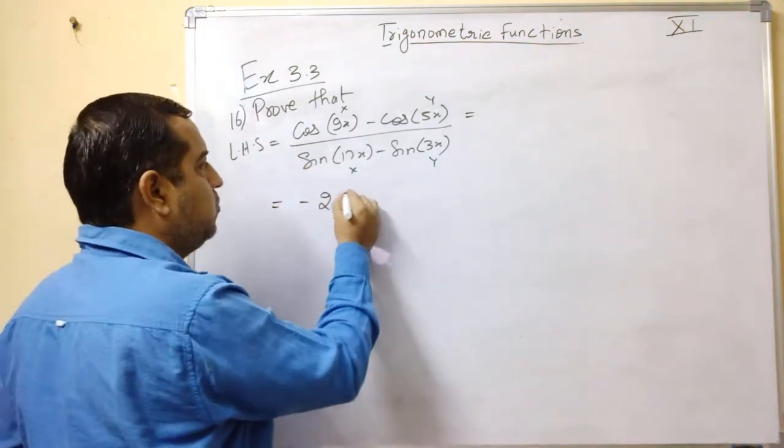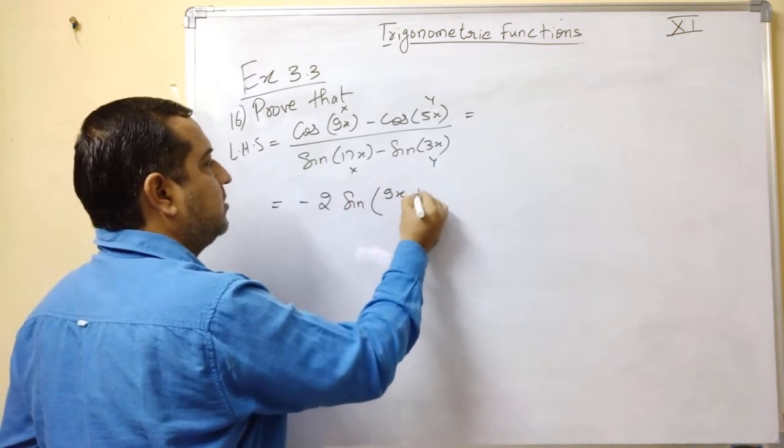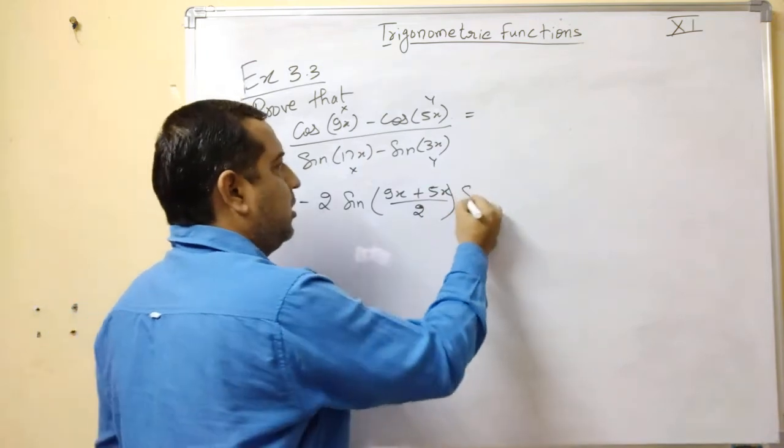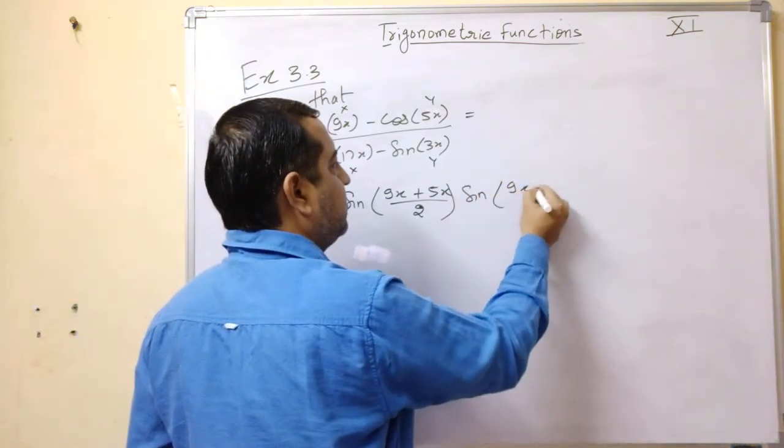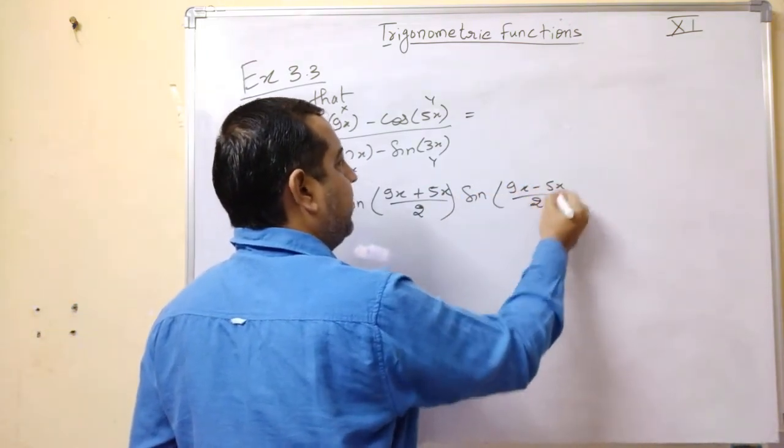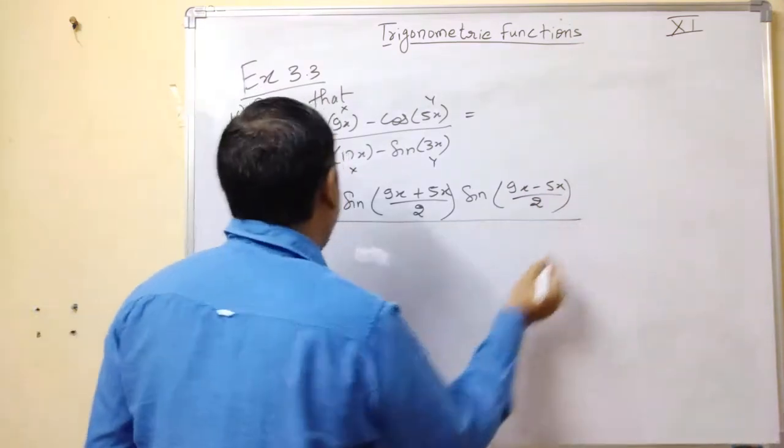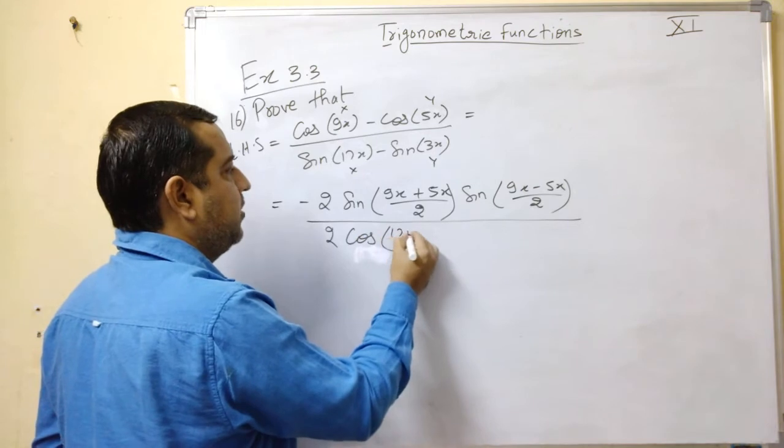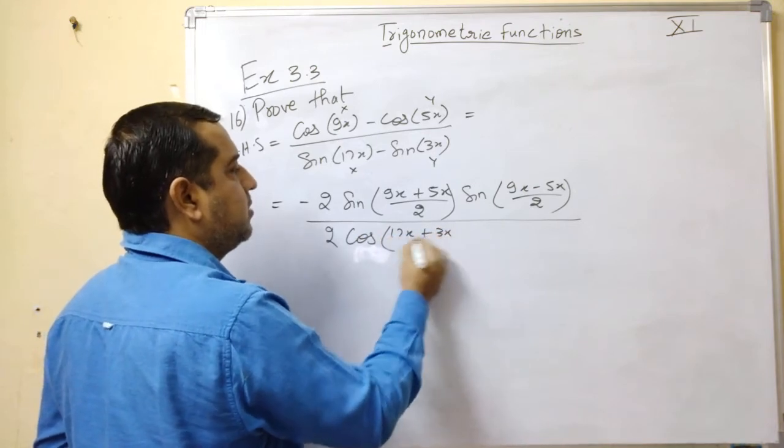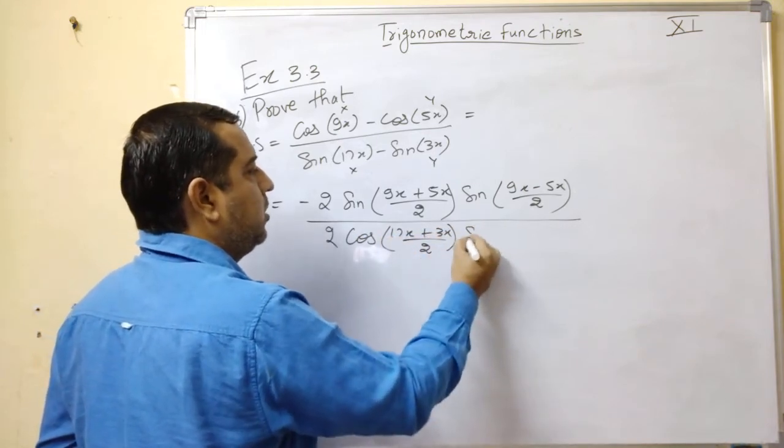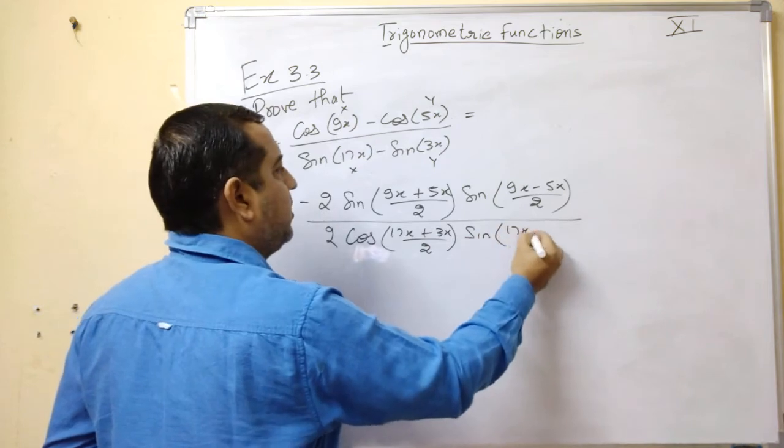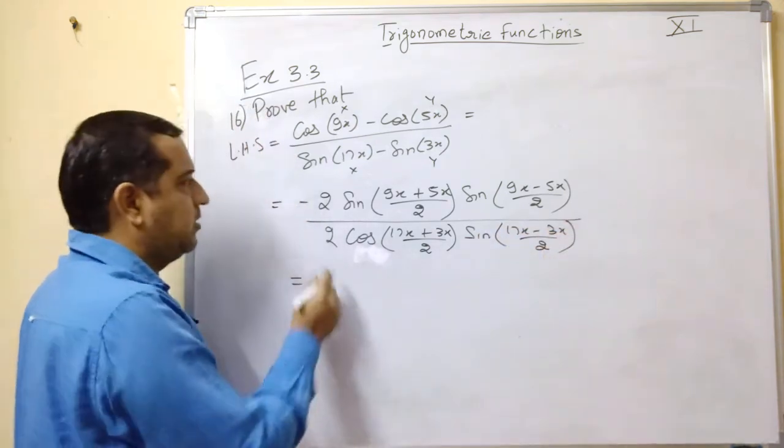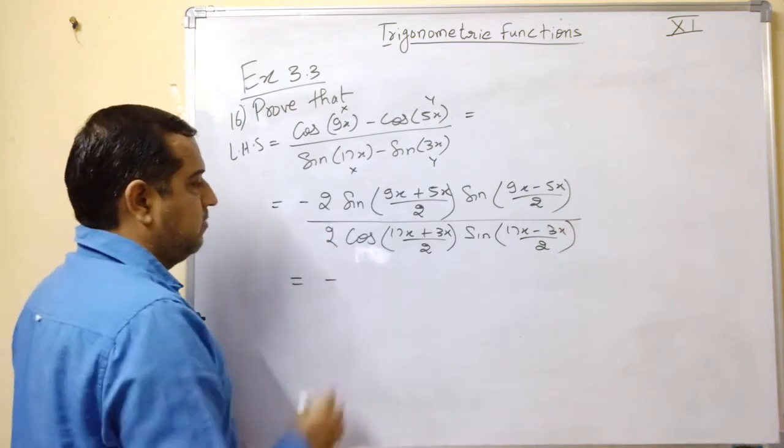So you get minus 2 sin of, a means 9x plus 5x divided by 2, into sin 9x minus 5x divided by 2. Upon here you get 2 cos of 17x plus 3x divided by 2, into sin of 17x minus 3x divided by 2. This gives you 2 and 2 get cancelled, minus.